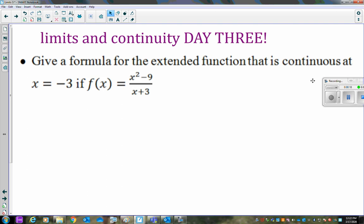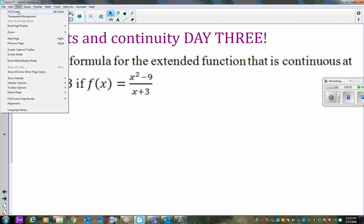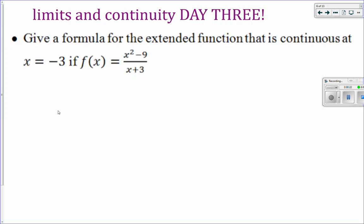So we'll get right to it. We're pretty much going to warm up with a problem very similar to the one we did last time. This is give a formula for the extended function that is continuous at x equals negative three if the original function is x squared minus nine all over x plus three.